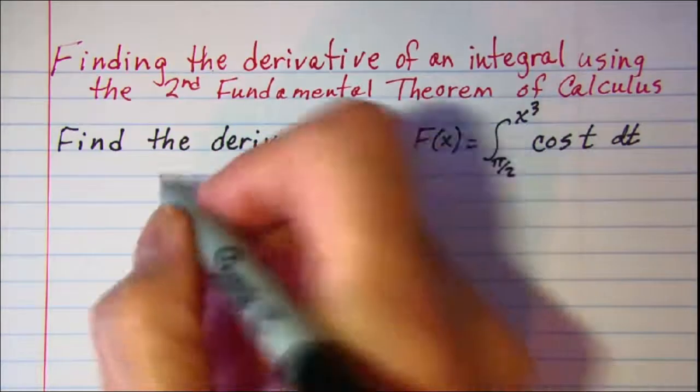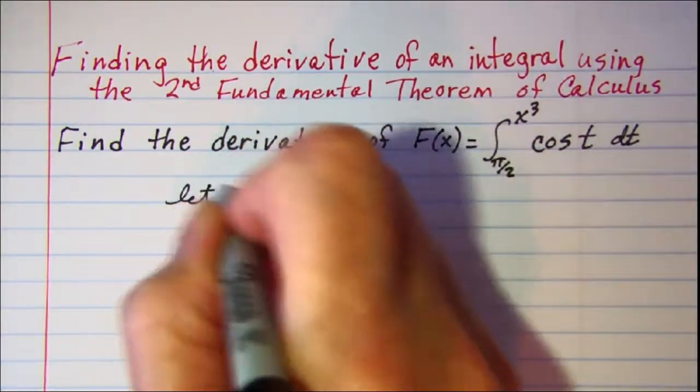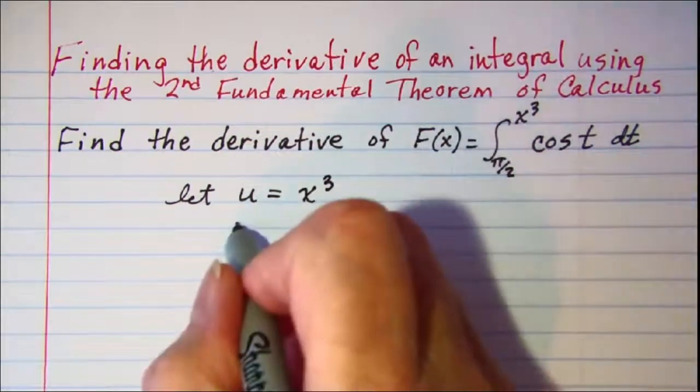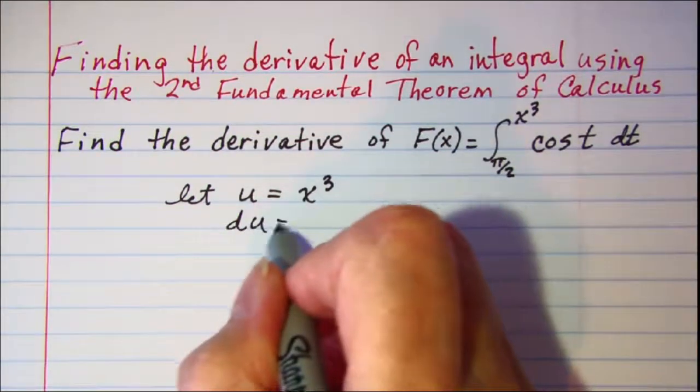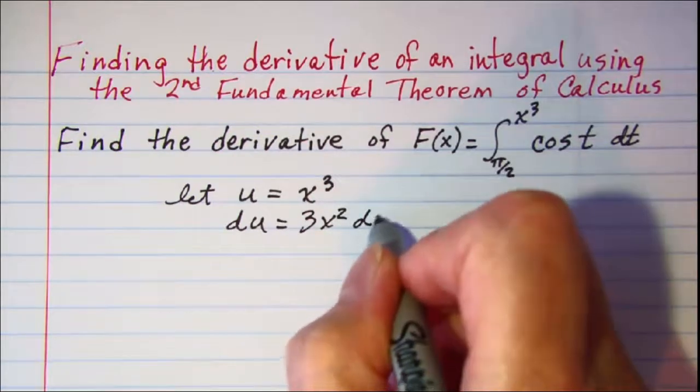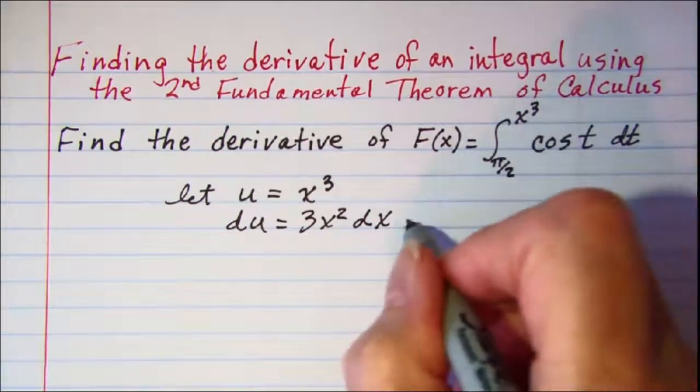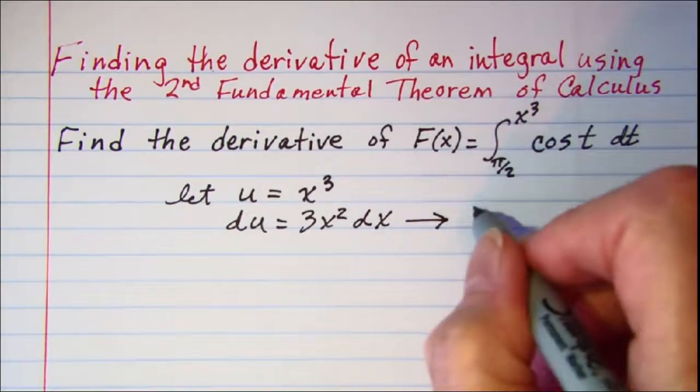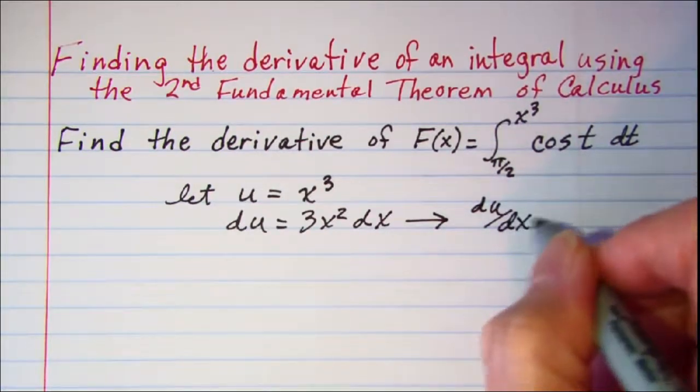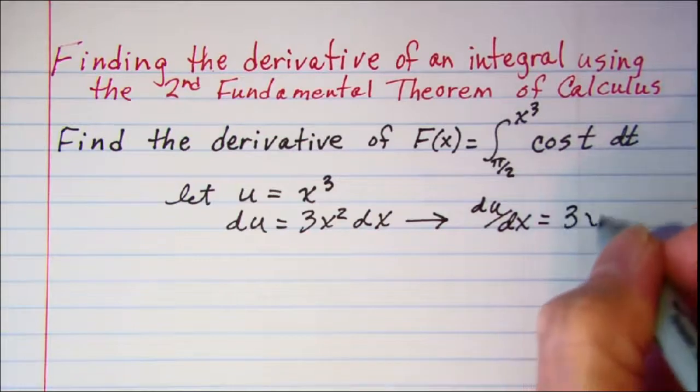So let's let u equal x cubed, then du is equal to 3x squared dx, so that gives us du dx is equal to 3x squared.